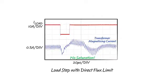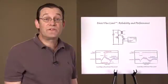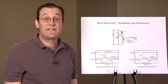Unlike conventional fixes, direct flux limit only limits the magnetizing current when absolutely necessary, resulting in a transient response that's up to 10 times faster.